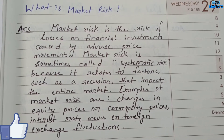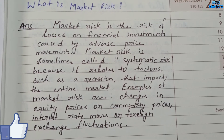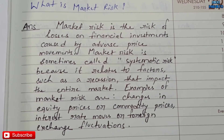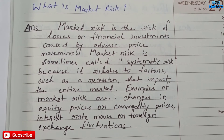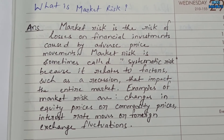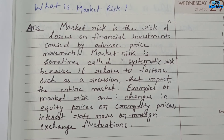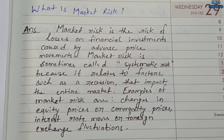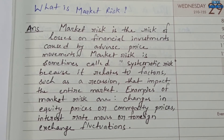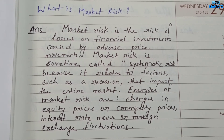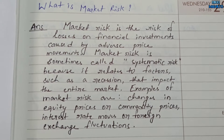Today's topic is market risk. Market risk is the risk of losses on financial investment caused by adverse price movements. Market risk is sometimes called systematic risk because it relates to factors such as a recession that impact the entire market.